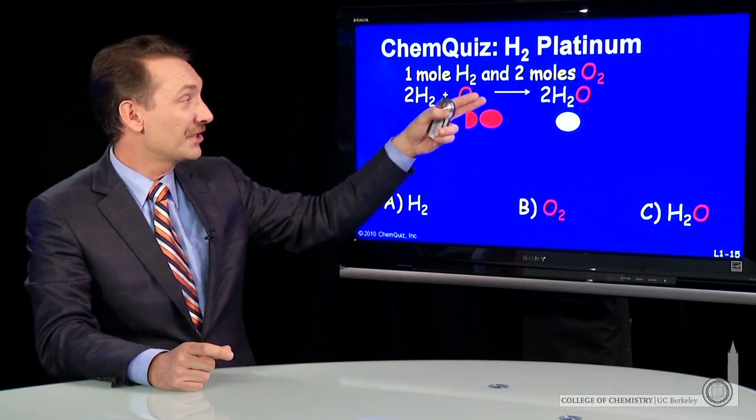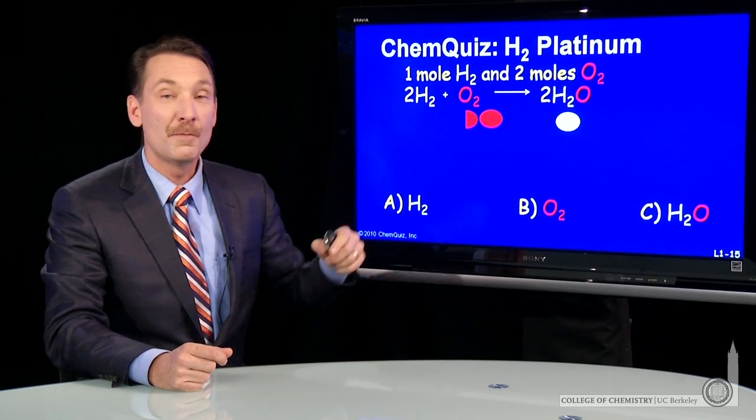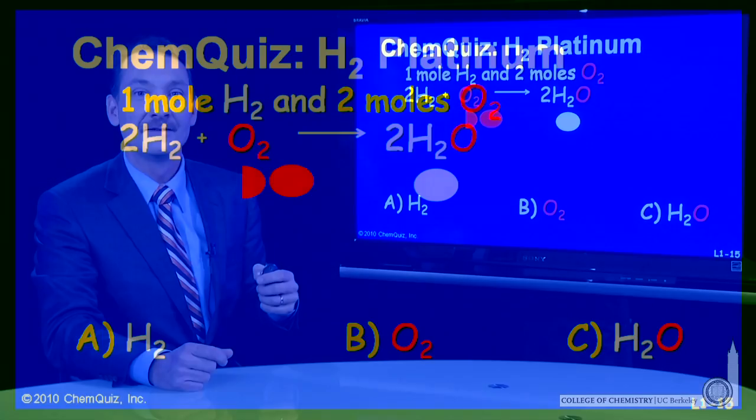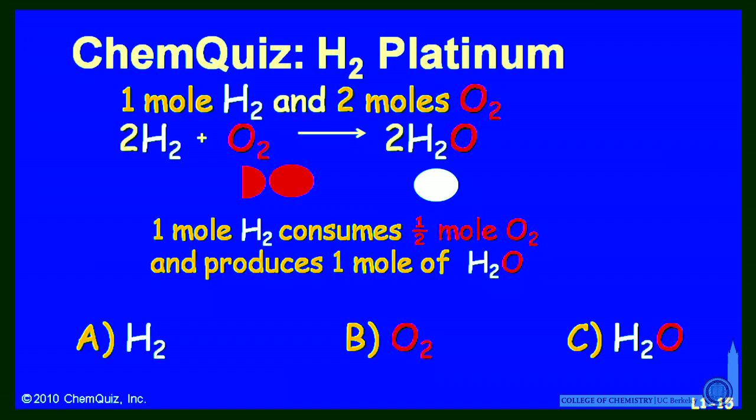So at the end of the reaction, one and a half moles of oxygen remain, and one mole of water remains, and no hydrogen remains. So the compound present there in the greatest number of moles is oxygen at one and a half. So the correct answer here is B, oxygen.